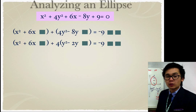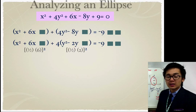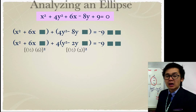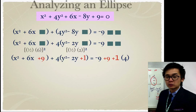With x² and y² isolated, we complete the square for each group. For the x terms, half of 6 is 3, and 3 squared is 9. For the y terms inside the parentheses, half of 2 is 1, and 1 squared is 1. This gives x² + 6x + 9 + 4(y² − 2y + 1) = −9 + 9 + 4(1), remembering to multiply the 1 by 4 because of the factored coefficient.